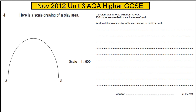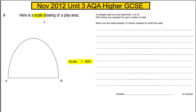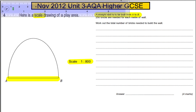This question shows a scale drawing of a play area. Usually these pictures say 'not drawn to scale', but here we have a scale — the scale is 1 to 800. A straight wall is built from A to B, and 250 bricks are needed for each meter. We need to work out the number of bricks needed for the wall, so let's get our ruler out.